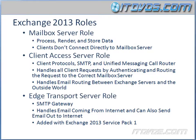When we install Exchange 2013, we can install certain roles, and those roles define the function that that server is going to perform in our Exchange environment. Exchange 2013 has three roles: Mailbox Server role, Client Access Server role, and Edge Transport Server role. The Edge Transport Server role was actually added with Exchange 2013 Service Pack 1. It's actually a bit more simple than previous versions of Exchange, like Exchange 2007 and Exchange 2010, where we had five roles.